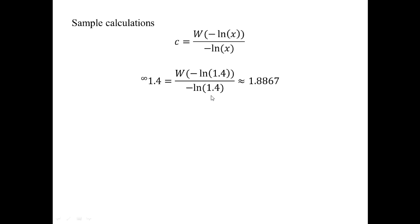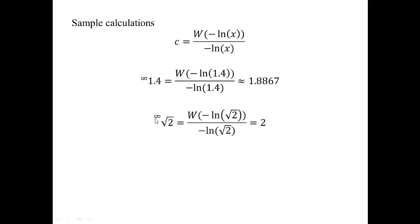Let's see some sample calculations. For X = 1.4, plugging into the formula gives 1.8867, which matches what we found earlier. An even more interesting calculation: taking the square root of 2 and doing the infinite tetration gives exactly 2, and the formula also agrees with this. To actually show directly that the infinite tetration of √2 equals 2 without the formula would be a good exercise.